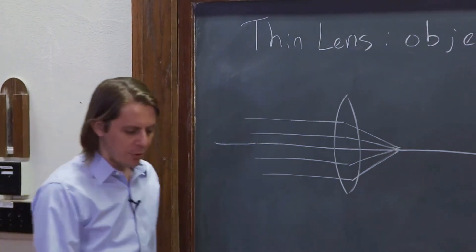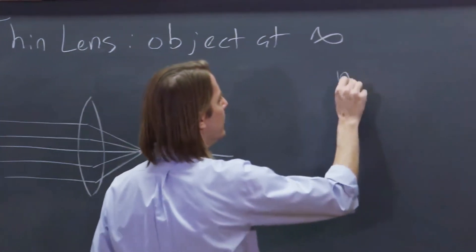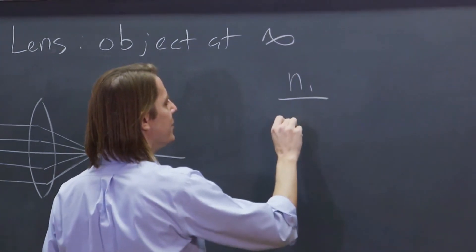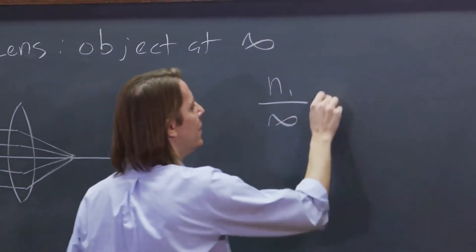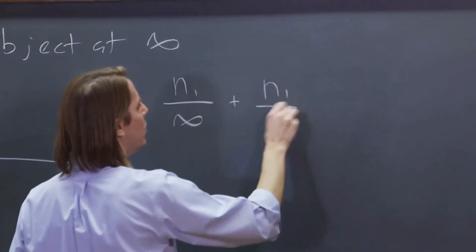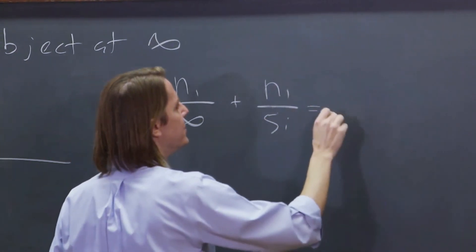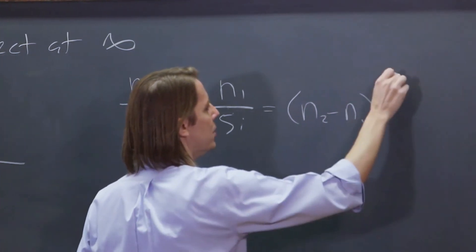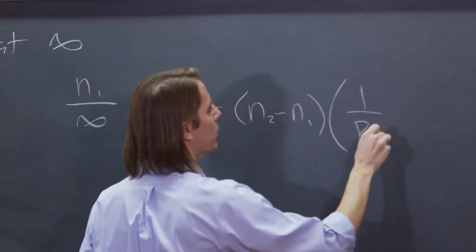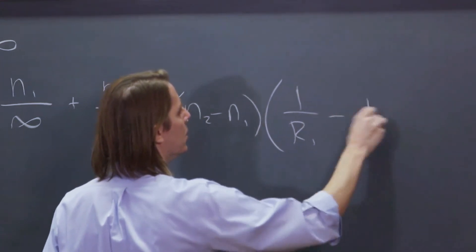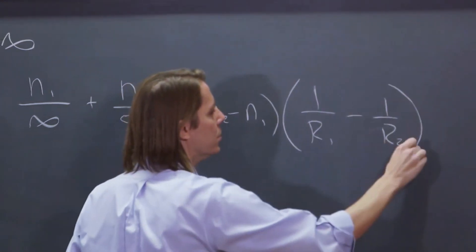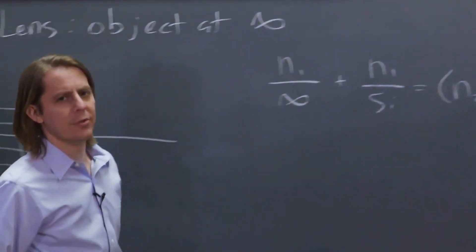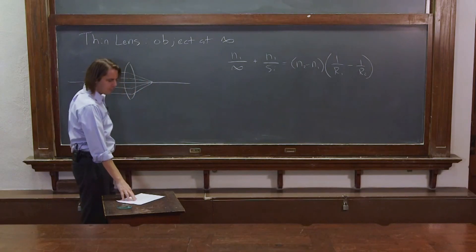So if we look at the lens equation and see what's happening, remember it was n1 over the object distance, which is infinity, plus n1 over the image distance, which equals (n2 minus n1) times (1 over r1 minus 1 over r2), if r1 is the front curvature.